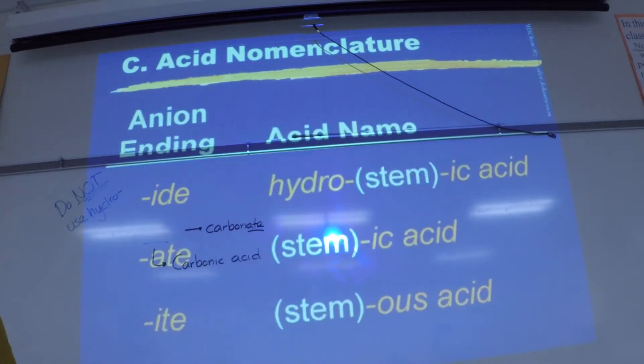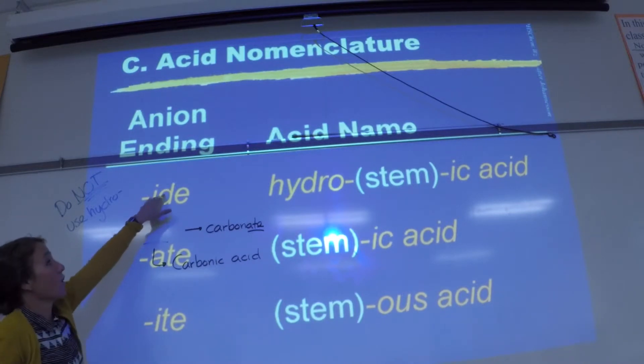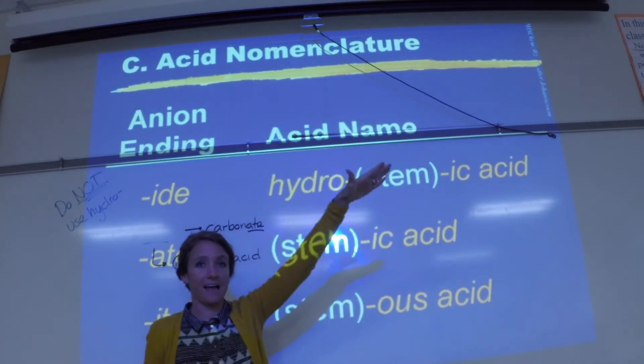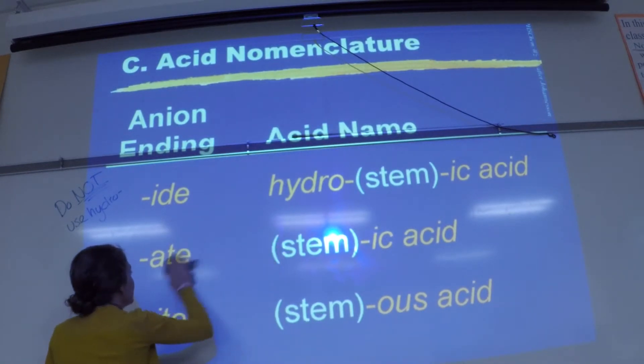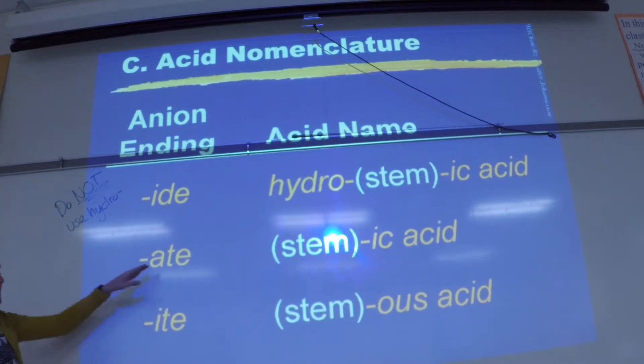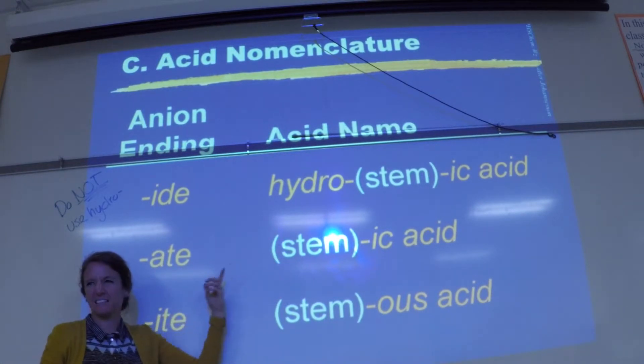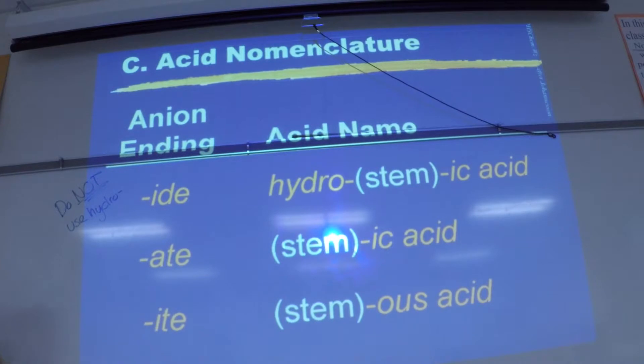Okay so here's kind of an overview of our different endings. So for elements we do the hydroic acid. If it ends in ate we change it to ic. You can think I ate something and it was icky. Ate-ic. And then I don't know a funny way to remember this one, but ite goes to ous. I've yet to think of anything that matches those two. So all right, for three smiley faces try problems four, five, and six down at the bottom.